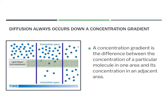When diffusion occurs, it always occurs down a concentration gradient. A concentration gradient is just the difference between the concentration of a particular molecule in one area and its concentration in an adjacent area. On one side we have a high concentration — lots of molecules — and on the other side a very low concentration. Diffusion moves from high concentration to low concentration, down the gradient.